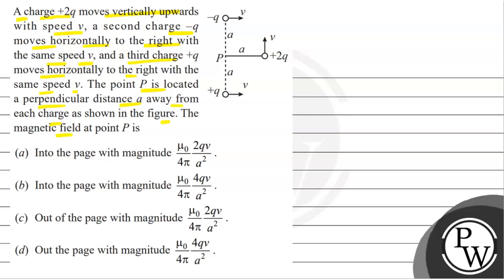The magnetic field at point P is: options are into the page with magnitude μ₀/4π 2QV/A², into the page with magnitude μ₀/4π 4QV/A², out of the page with magnitude μ₀/4π 2QV/A², out of the page with magnitude μ₀/4π 4QV/A². We have to choose the correct option.